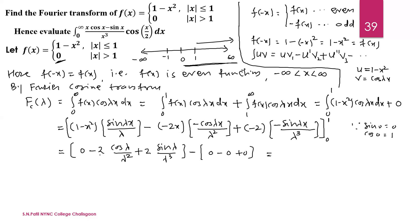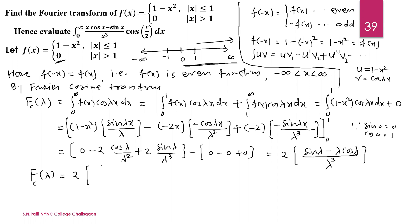Simplifying: we have 2 common in the numerator, with denominators λ² and λ³. Taking LCM as λ³ throughout, we write the positive sine term first. Multiplying and dividing by λ where needed: F_c(λ) = 2[sin λ - λcos λ] / λ³.